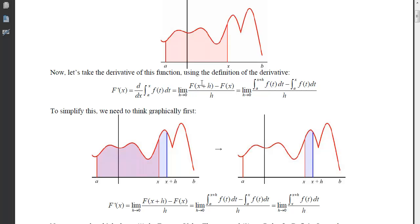Now I'm going to plug x plus h into the big function, which means I will accumulate from a up to x plus h on the little f, and then I'm going to subtract x plugged into that function, which means that upper limit will be an x.